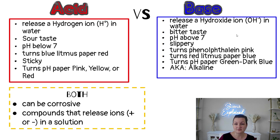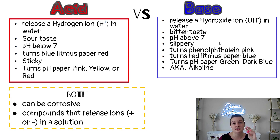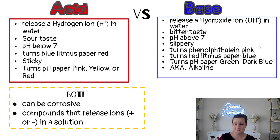Bases, on the other hand, release hydroxide ions — the OH negative — in water. They're very bitter tasting, kind of like a soap. Their pH is above seven, so 7.1 all the way to 14, and they are slippery to the touch — think about soap, it's very slippery. Bases turn phenolphthalein pink, turn red litmus paper blue, and turn pH paper anywhere from green to a dark blue shade, depending on strength. We also call a base alkaline.